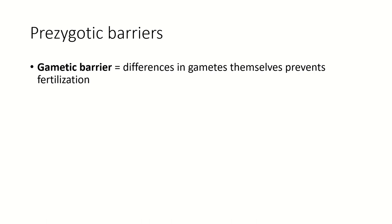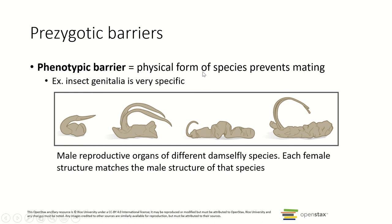There can also be gametic barriers — differences in gametes that prevent fertilization, such as the coating or jelly coat on an egg not reacting to sperm. There are also phenotypic barriers, where even when two different species behaviorally attempt to mate, the genitalia literally don't fit together. With insects, genitalia is really complex, and in fact several species of insects can only be distinguished by their genitalia.